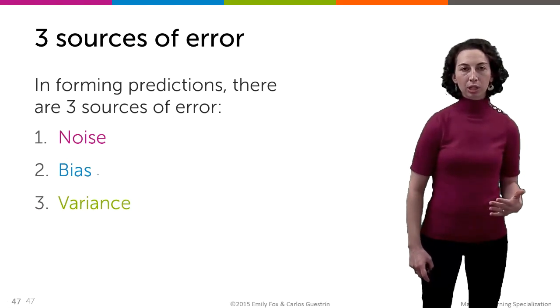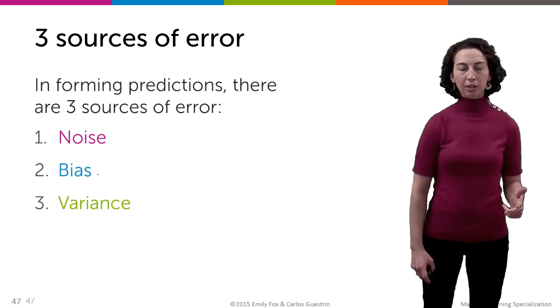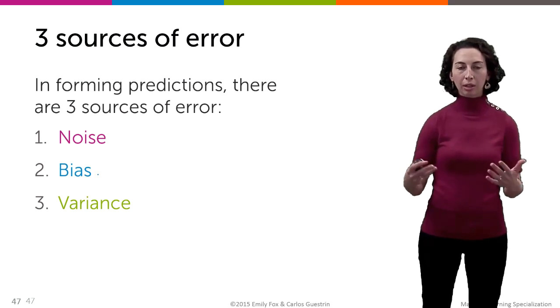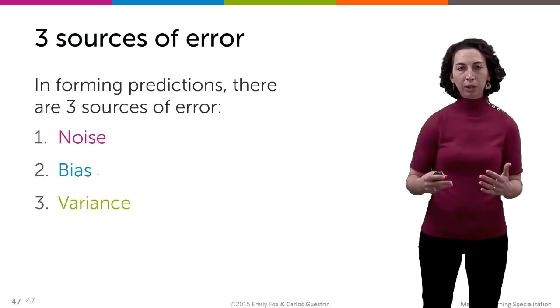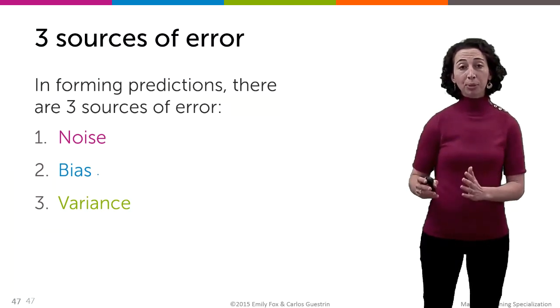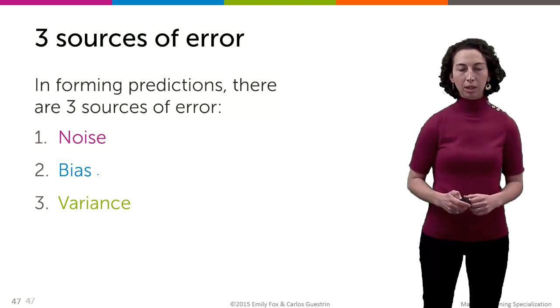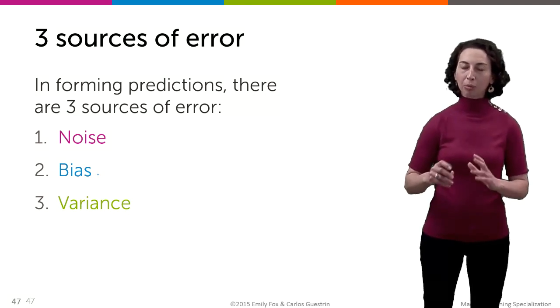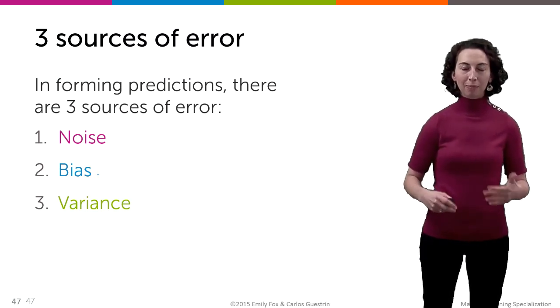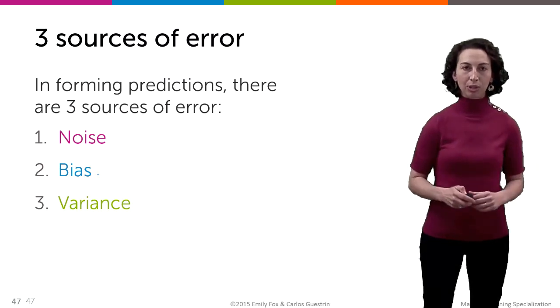When we're forming our predictions, there are three different sources of error: noise, bias, and variance. In this part, we're going to walk through these three different components at a very high level, at a more intuitive level. And then following this, there are going to be two optional sections that go into much more formalism and detail about this. But those are optional because we're not requiring that you know this to get through the course. But for those that are interested, we will be providing the formalism behind these notions that I'm presenting now.